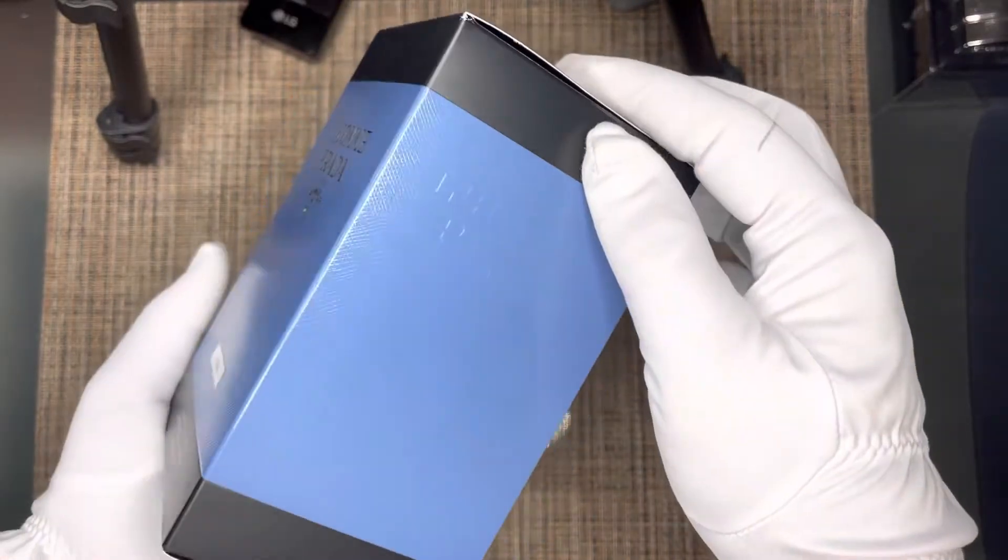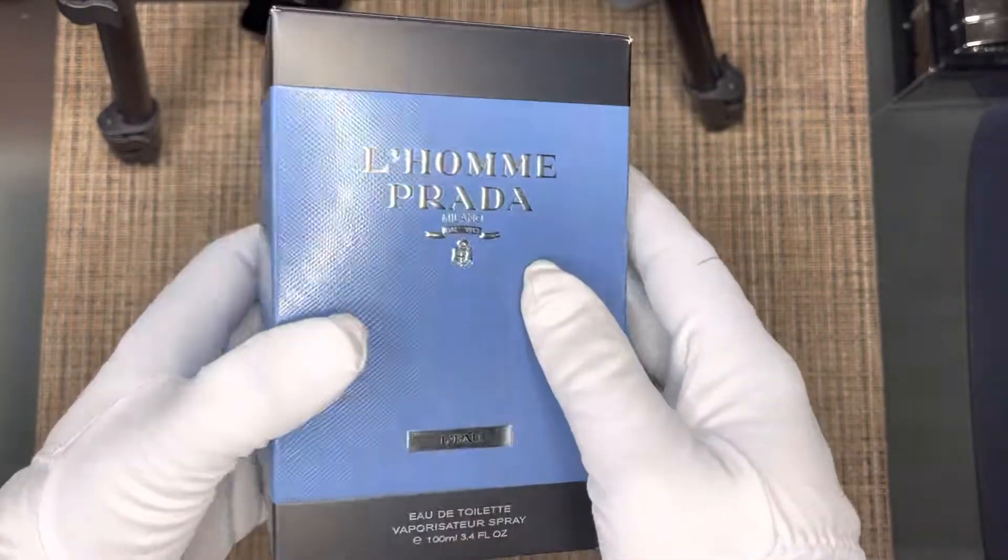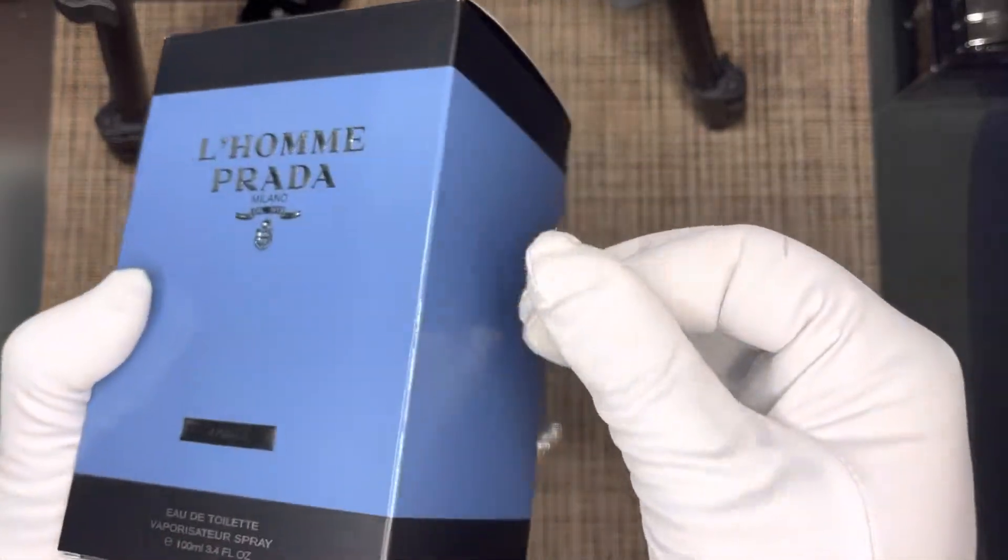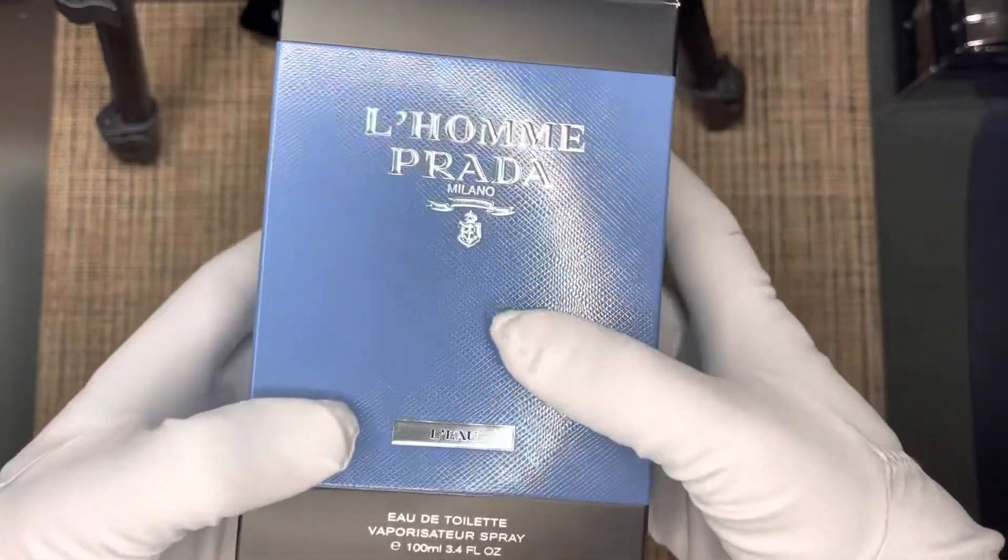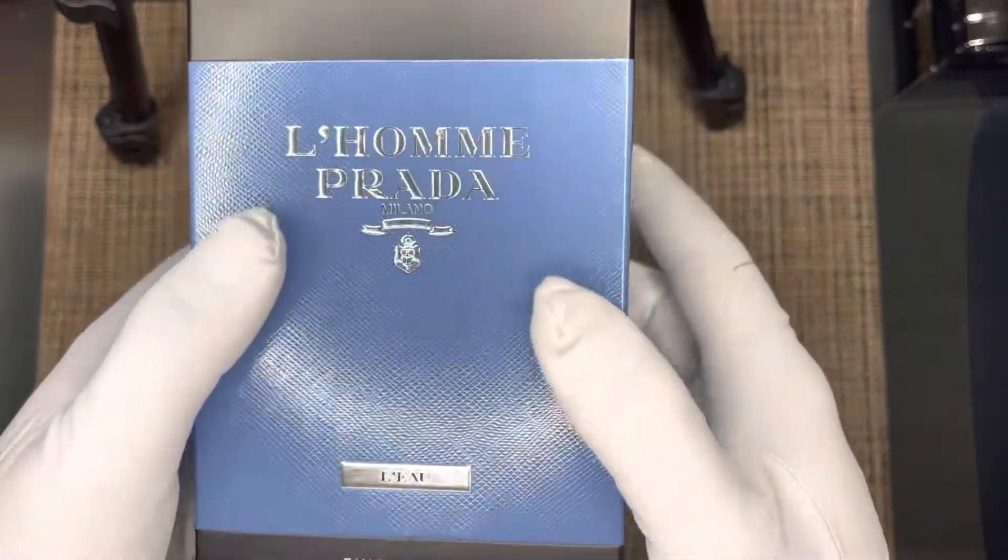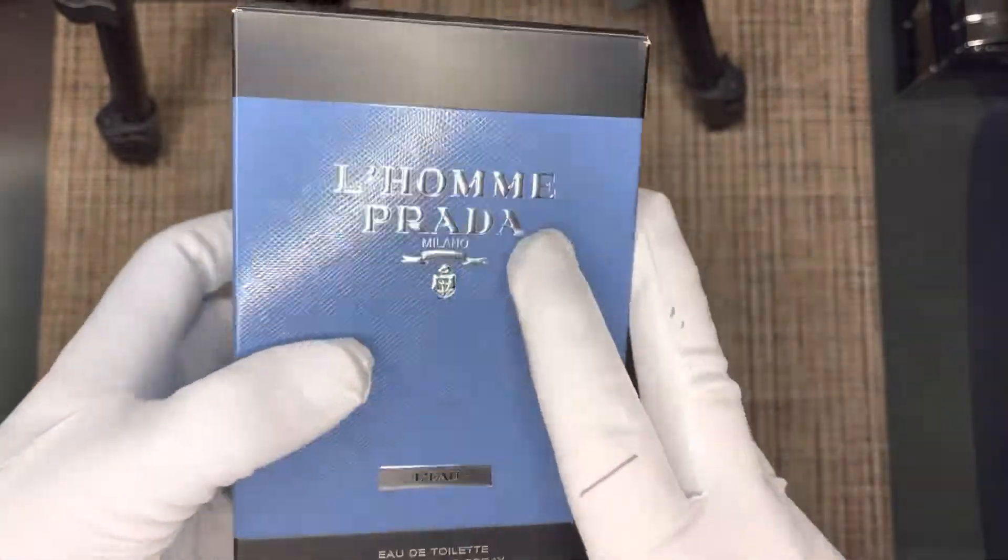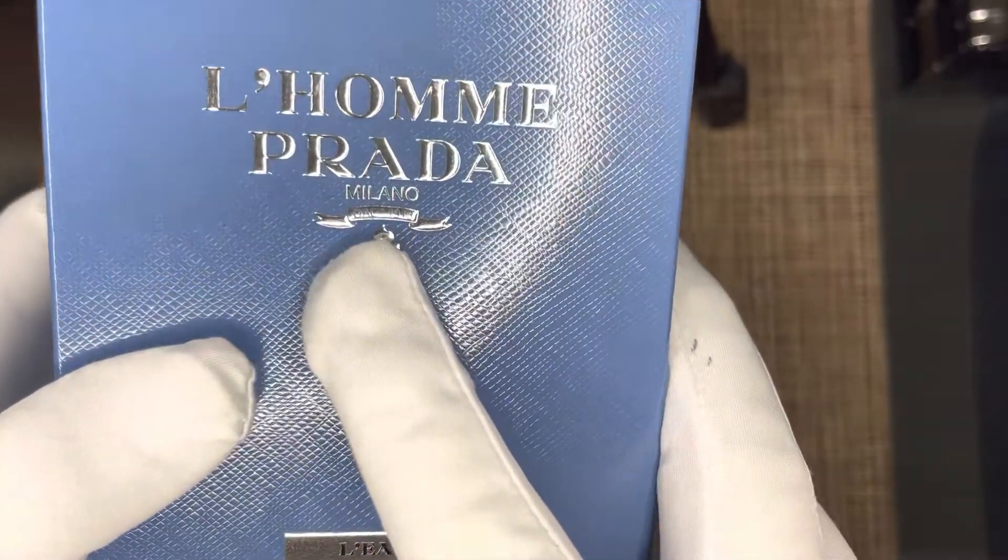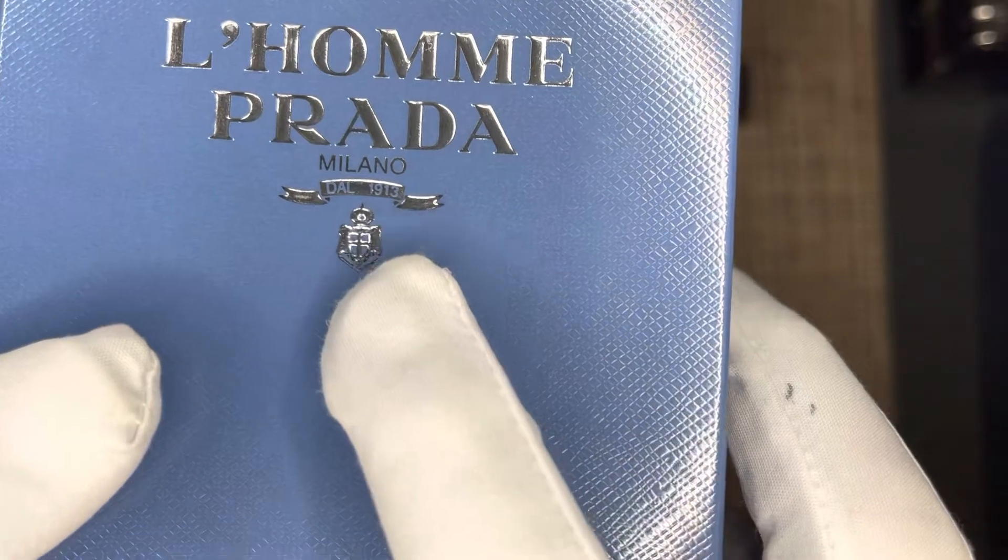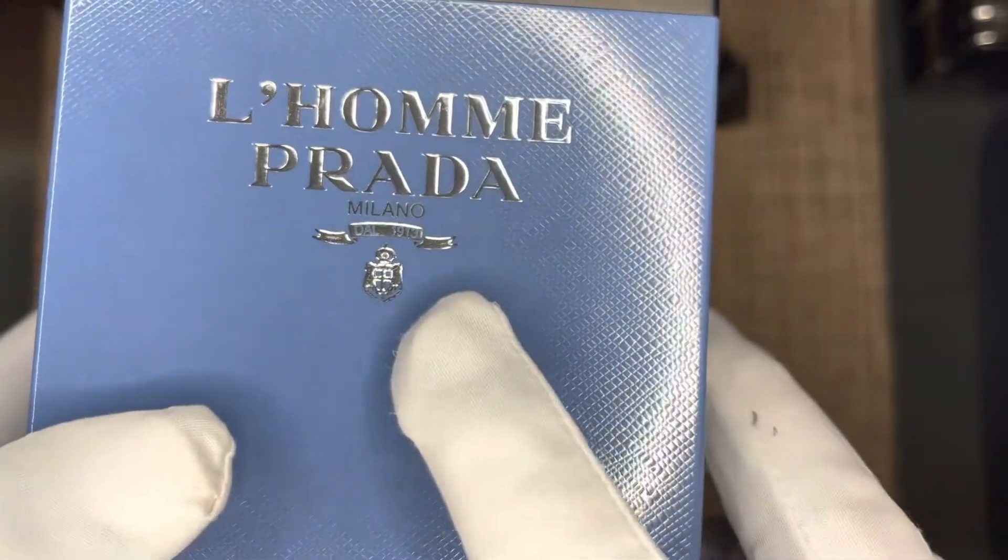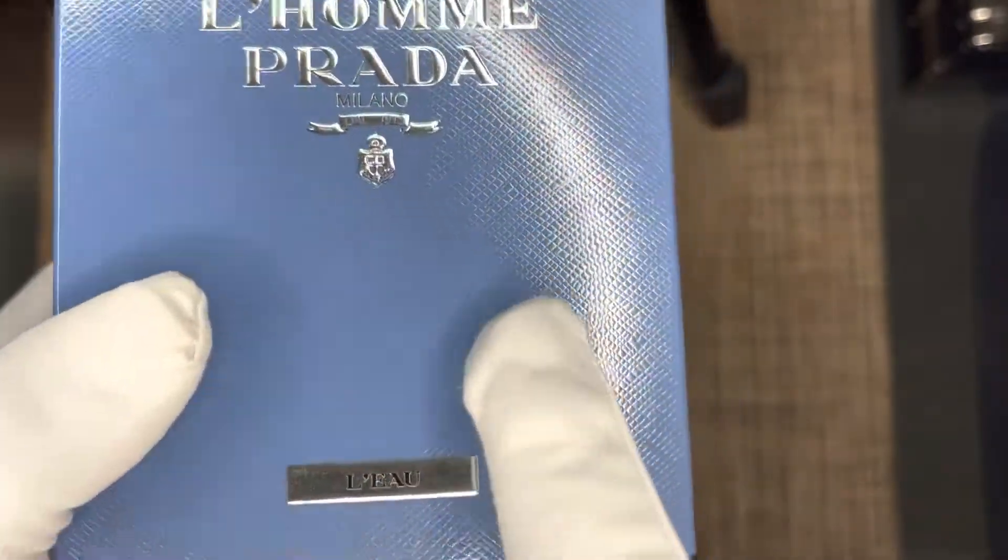Here it is in front of us. The plastic has been removed. You can see the packaging has an indigo blue type color with black at the borders, and the blue part has some etching on it, some patterning. It has L'Homme Prada written on it in silver and says Milano since 1913. That's when the brand was established and Milano is their headquarters. It has the seal of Prada on it as well.